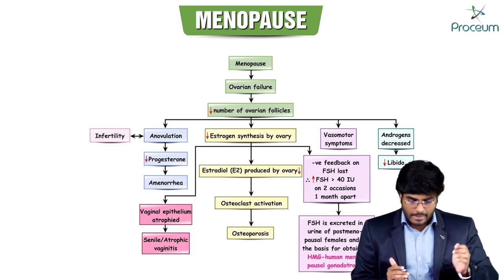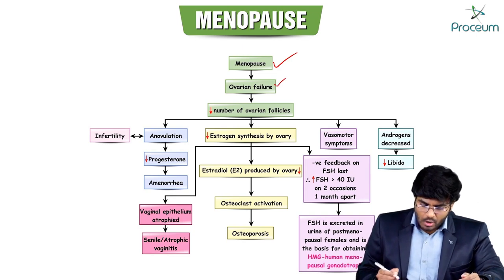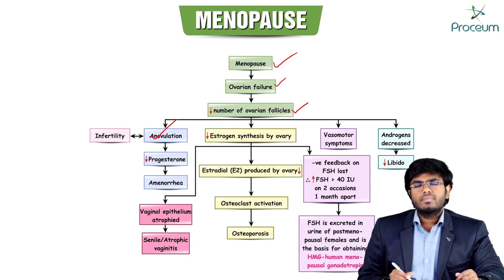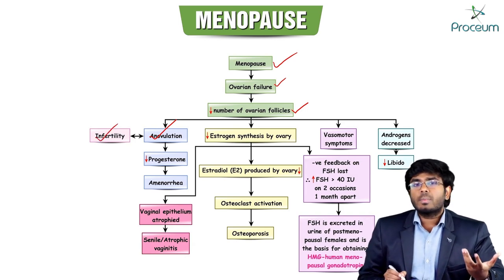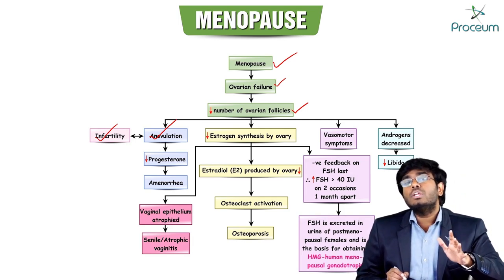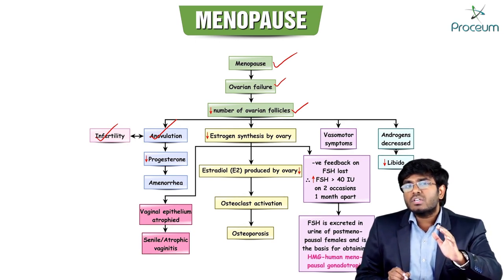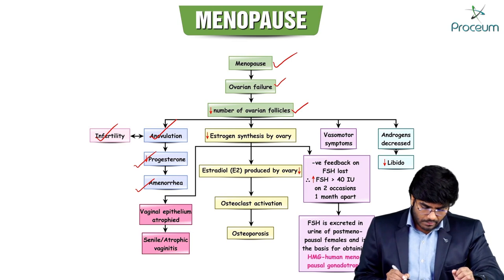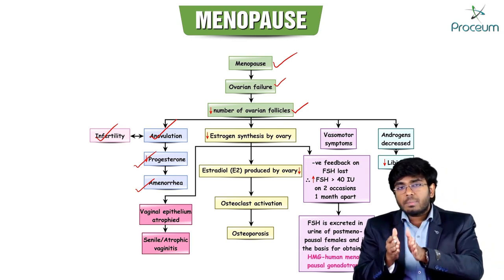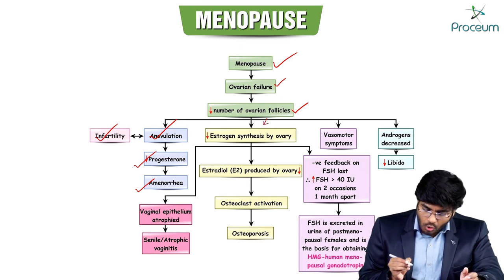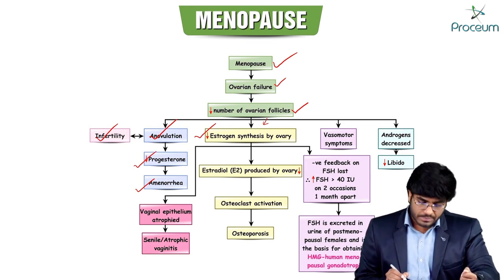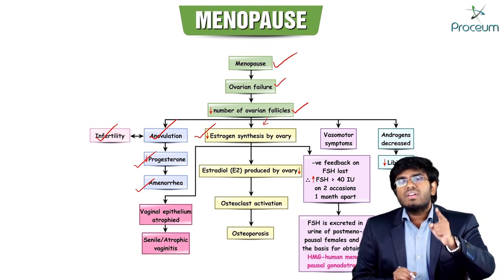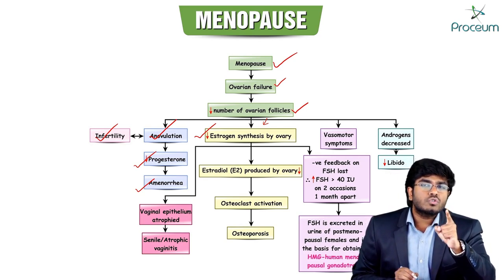The pathophysiology of menopause: ovarian failure means a decrease in the number of ovarian follicles. With no follicles, there is anovulation, making the female infertile. Anovulation means no corpus luteum formation, which means no progesterone production and therefore amenorrhea. Additionally, estrogen synthesis from the ovaries is also decreased.